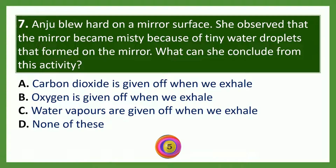Jude blew hard on a mirror surface and observed that the mirror became misty because of tiny water droplets that formed on it. What can she conclude? Option A — carbon dioxide is given off when we exhale; option B — oxygen is given off when we exhale; option C — water vapors are given off when we exhale; option D — none of these. The answer is option C — water vapors are given off when we exhale.